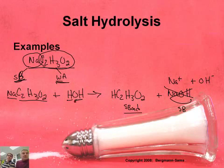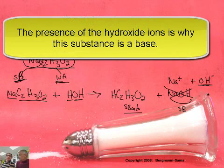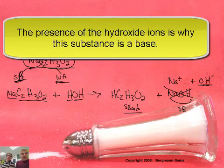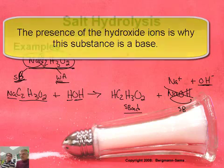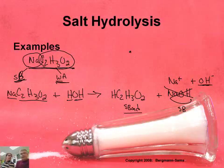As it turns out, when you have this particular salt, since it produces free hydroxide ions, it's a base — a basic solution. So if you take sodium acetate, stick it in water and put a pH meter in, it's going to read 8 or 10 or some high number higher than 7.